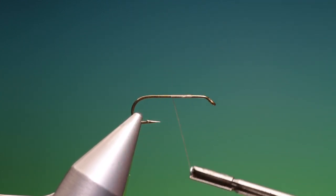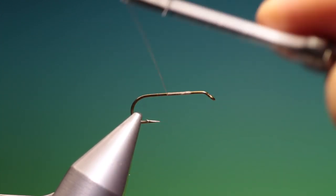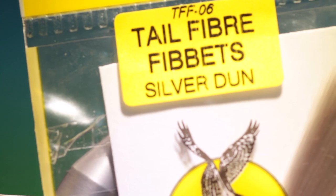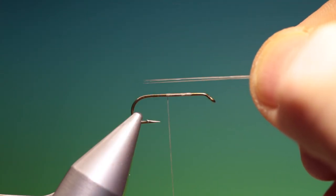I want to keep the body nice and slender here for the tapered dubbed body. So we go back to about there, then what we need is some tail fibbits, silver done. Just need a small bunch of these, you don't have to count them.